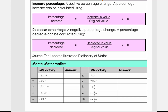Increased percentage means a positive percentage change. A percentage increase can be calculated using the increased value over the original value times 100. When we look at decreased percentage, it's a negative percentage change. A percentage decrease can be calculated by the decrease in value over the original value times 100.